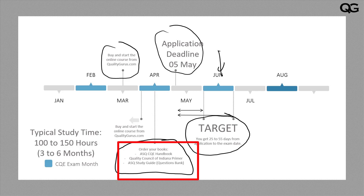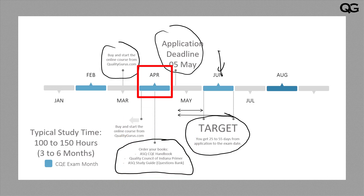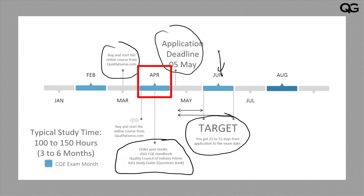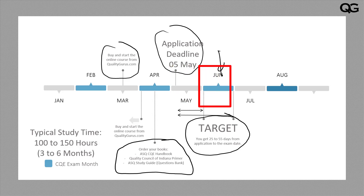To put this all together as a timeline: in March, you buy the course and start working on it. In April, you place an order for the books and start preparing with them as well. As you gain confidence, you submit your application — before May 5th, ideally well before that. Then you appear for the exam somewhere in June, from the 1st to the end of June. This is how I would suggest you plan for this exam.